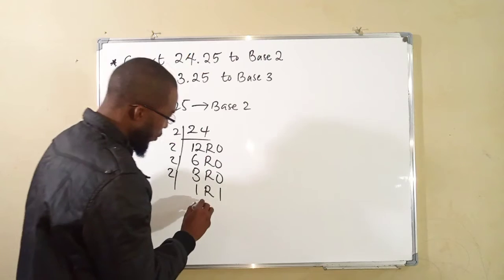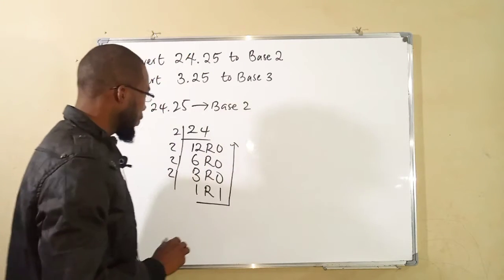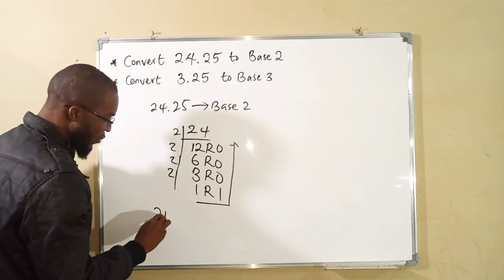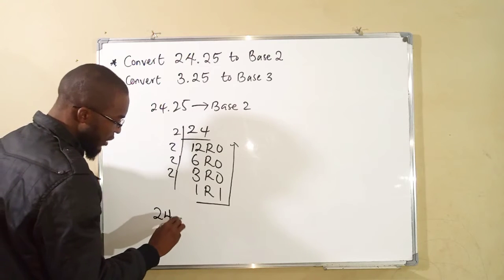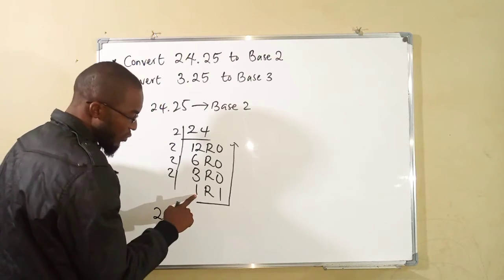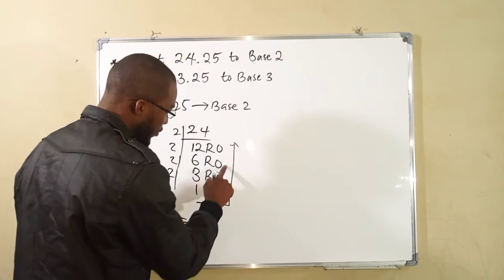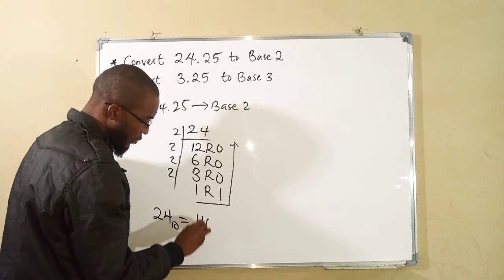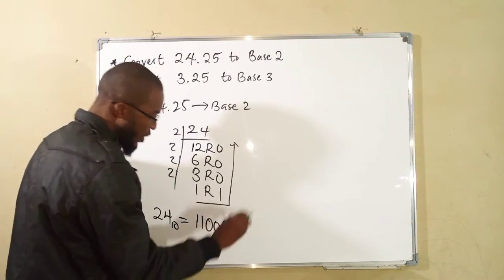So it's stopped. We take these numbers from bottom to the top. This means that 24 in base 10 is equal to, we start with this: 1, 1, 0, 0, 0 in base 2.